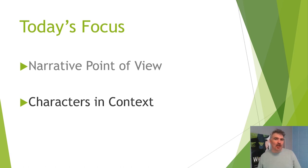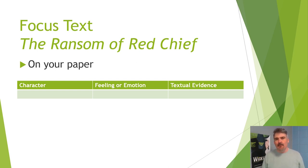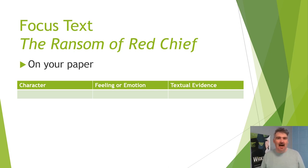Today's focus continues looking at narrative point of view, but we want to look more in-depth at characters in context. Today we will analyze a literary passage in order to determine its meaning and the importance of point of view in conveying that meaning. On a piece of paper, I'd like for you to draw the chart that you see on the screen. It's going to have three columns: at the top of the first write 'character,' the second 'feeling or emotion,' and the third 'textual evidence.' I'll give you just a second to write that.